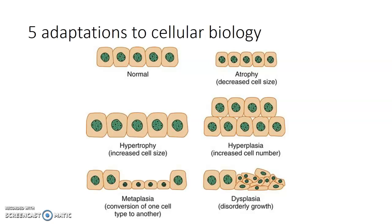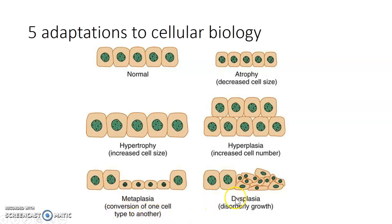Some adaptations to cellular biology. Normal atrophy is decreased cell size; hypertrophy is increased cell size. Hyperplasia is increased cell number; metaplasia is the conversion of one cell type to another; and dysplasia is disorderly growth. Make sure you know those — they will be on your test.